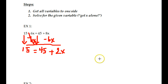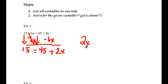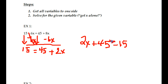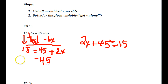Now it's backwards, but we can still solve this. This is what people get tripped up on. If you can solve 2x plus 45 equals 15, you would subtract the 45. You do the same thing here — you subtract the 45. Some people just don't see that it's addition.